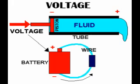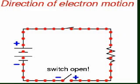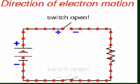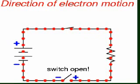As was previously mentioned, we need more than just a continuous path, called a circuit, before a continuous flow of electrons would occur. We also need some means to push these electrons around the circuit.